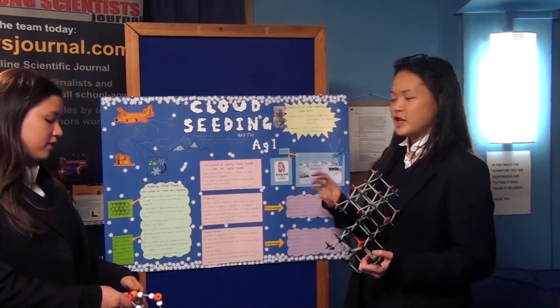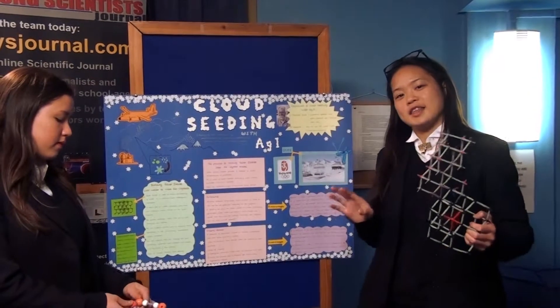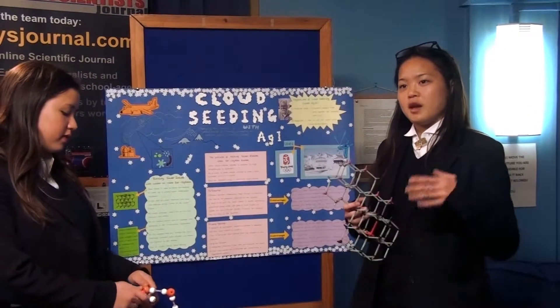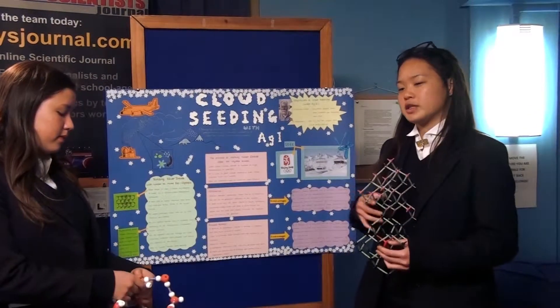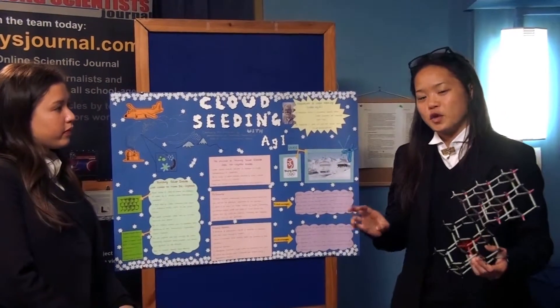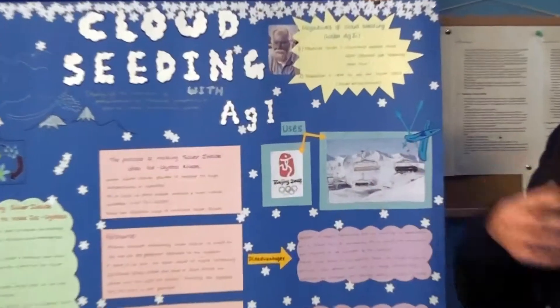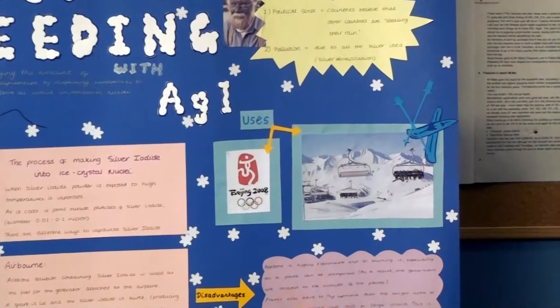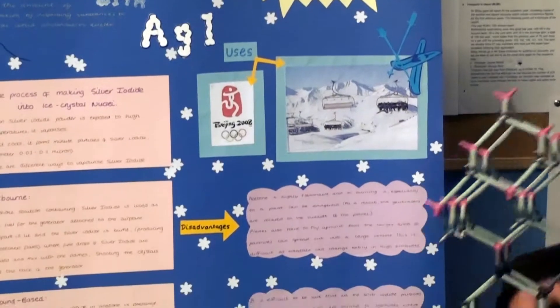The average output of the generator on the plane is about 10 to the 13 particles per cubic meter, but for it to be effective only 10 to the 3 or 4 is needed. So by flying upwind, it covers a large area and less silver iodide is wasted.